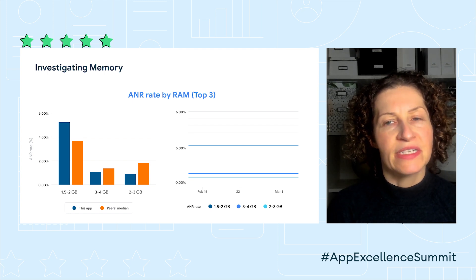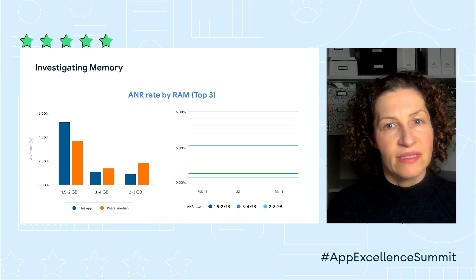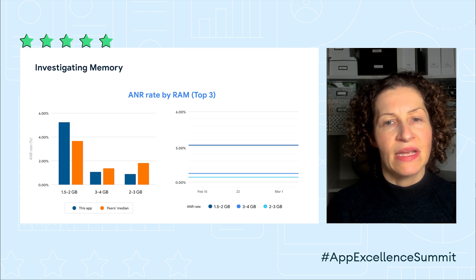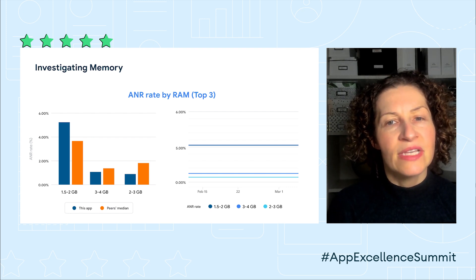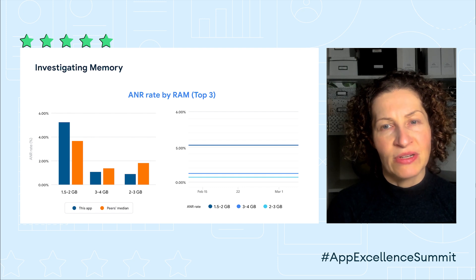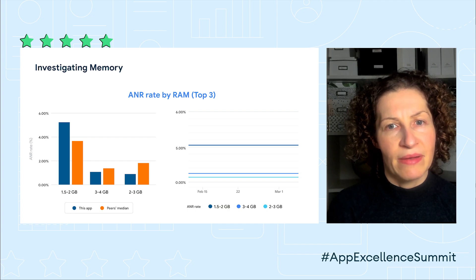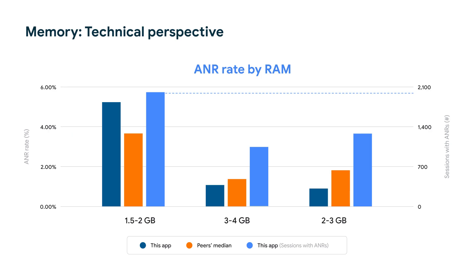The blue bar is the data for your app in the left-hand chart. The orange is the data for your peers. I want to zoom in a bit first. Since we're interested in optimization opportunities, top three is a bit limited, so let's click on explore to go deeper. Here you see the chart blown up bigger. As before, the dark blue bar is your app's ANR rate. According to this chart, for my app, I have the highest ANR rate on one and a half to two gigs RAM at over five percent.